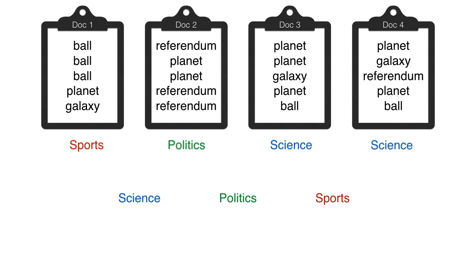If you went for something different, that's completely okay. But the question is: we used language because we are humans and we know what these words mean, but the computer doesn't. The computer only knows if two words are the same or different, or if two words appear in the same document. And that's where Latent Dirichlet Allocation will come to help us.